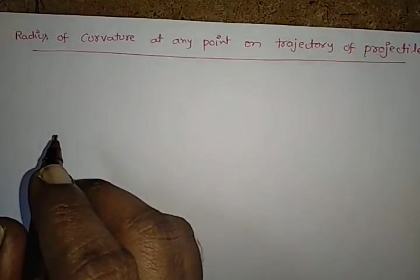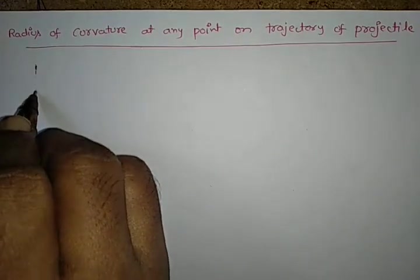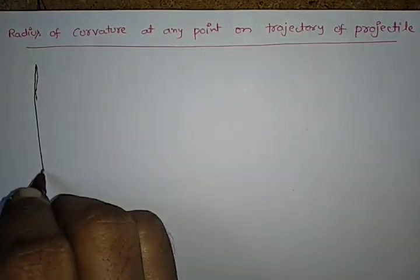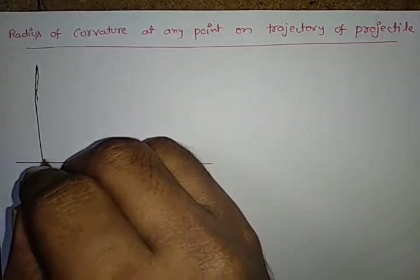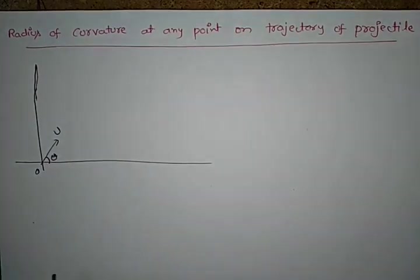Here we consider an object which is thrown with velocity u from point of projection O by making an angle theta with horizontal.